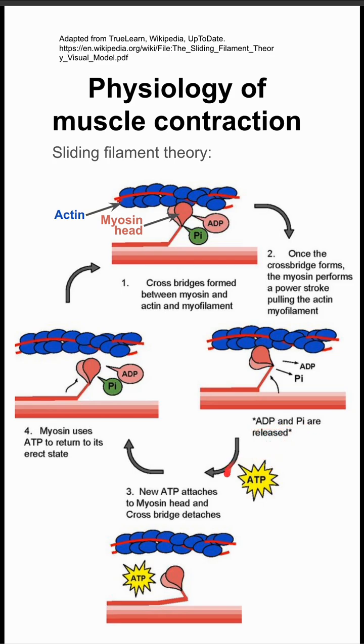When you have the addition of ATP to the system, it makes the myosin head detach from the other filament, releasing it.